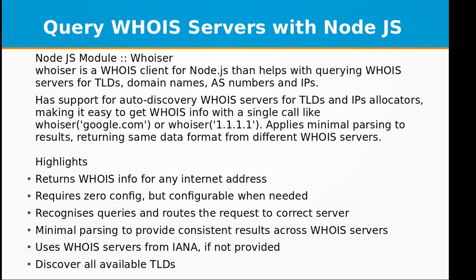We are going to implement a query application which will be accessing the WHOIS server. The module we are going to use is 'whoisit' — a WHOIS client for Node.js that helps with creating WHOIS servers for TLDs, domain names, AS numbers, and IPs. It has support for autodiscovery of WHOIS servers for TLDs and IPs, making it easy to get WHOIS info with a single call by passing in a domain name or IP address.